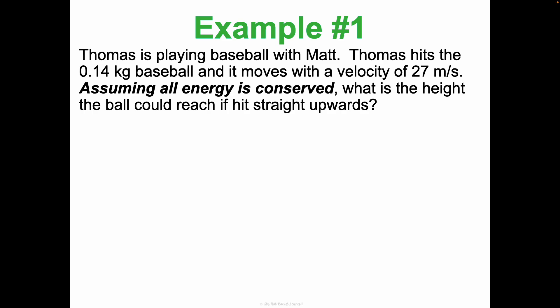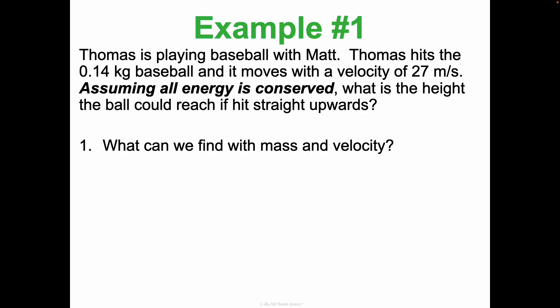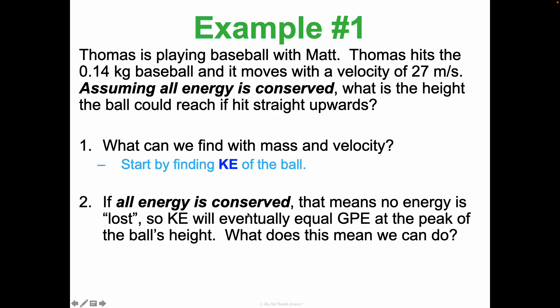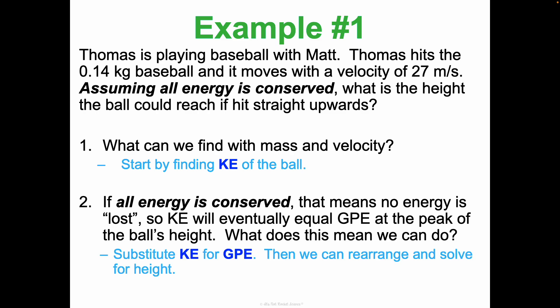Thomas is playing baseball with Matt. Thomas hits a 0.14 kg baseball, and it moves with a velocity of 27 meters per second. Assuming all energy is conserved — none is lost to thermal energy or friction — what height could the ball reach if hit straight upward? Basically, if all that kinetic energy converts to GPE at the peak, we can find how high the ball gets. With mass and velocity we can find kinetic energy using KE = ½mv². That KE will equal the GPE at the peak, so we can rearrange to solve for height.